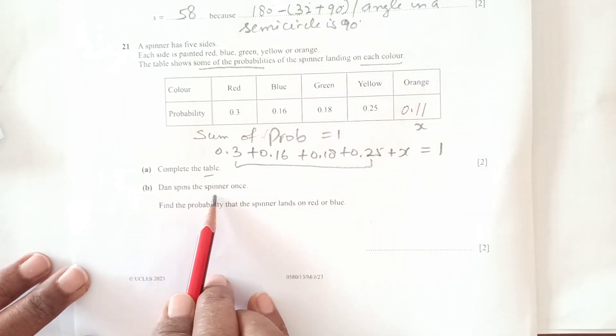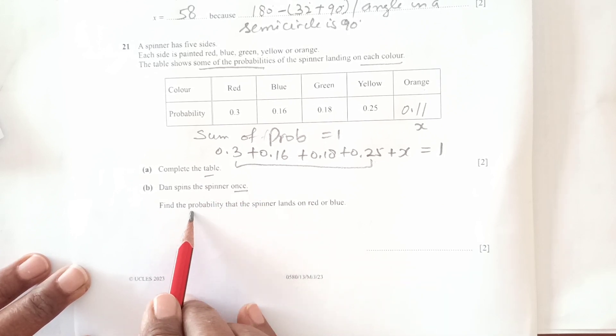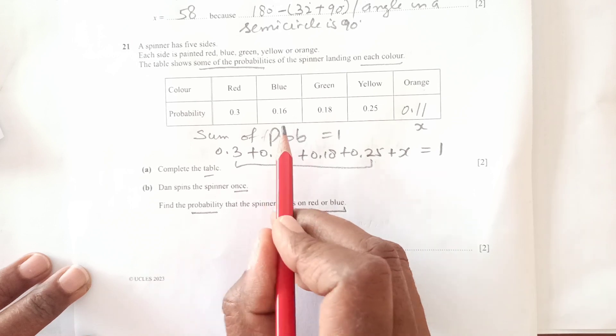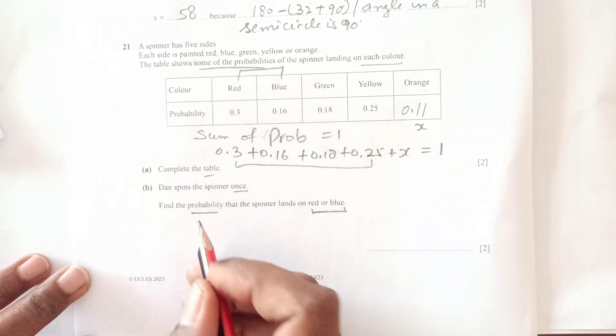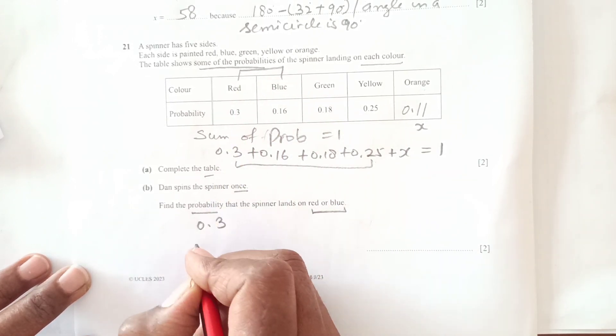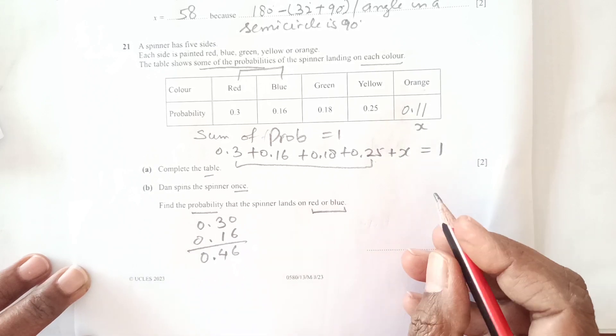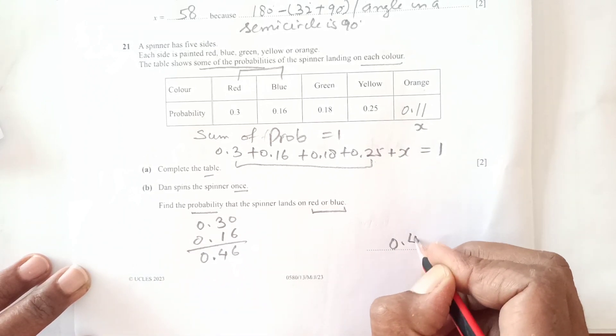Dan spins the spinner once. Find the probability that it lands on red or blue. We add 0.3 and 0.16, which equals 0.46.